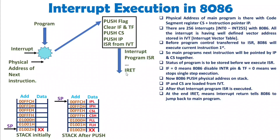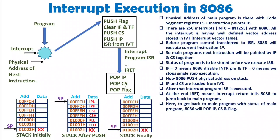Note that it is IRET — interrupt return — not just RET. There is a difference between a normal return and an interrupt return. Once IRET executes, 8086 jumps back to the main program. It cannot jump directly — it must restore the saved address and flag. So it performs pop IP first, then pop CS, then pop flag, following the last-in-first-out (LIFO) order of the stack. Program control then returns to the main program with the original flag status.